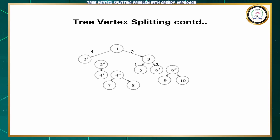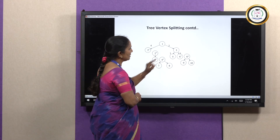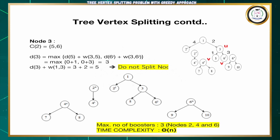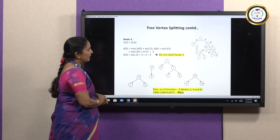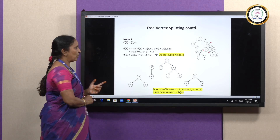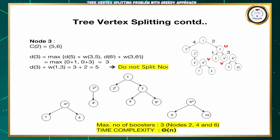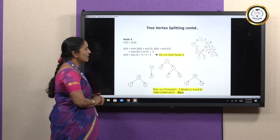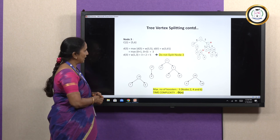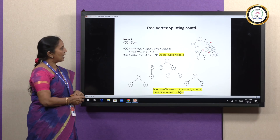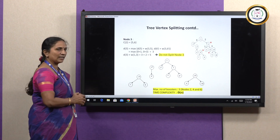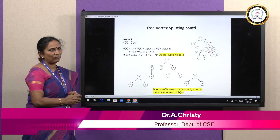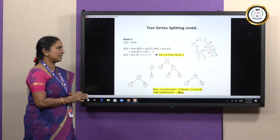Now we are left with only one vertex, vertex 3. In vertex 3, there are two child nodes: child node 5 and node 6i. We need to find the delay of node 3: D(5) = 0 plus weight from node 3 to node 5 = 1; and delay of node 6i = 0 plus weight from node 3 to node 6i = 3. The maximum value is 3, so D(3) = 3. Now checking whether to split: D(3) plus weight from node 1 to node 3 = 3 + 2 = 5. The tolerance level is 5 and the current value is also 5. It is not greater than the tolerance level, so we need not split the node. No need to find the delay for the root node since that is the starting location from which signals are transmitted.